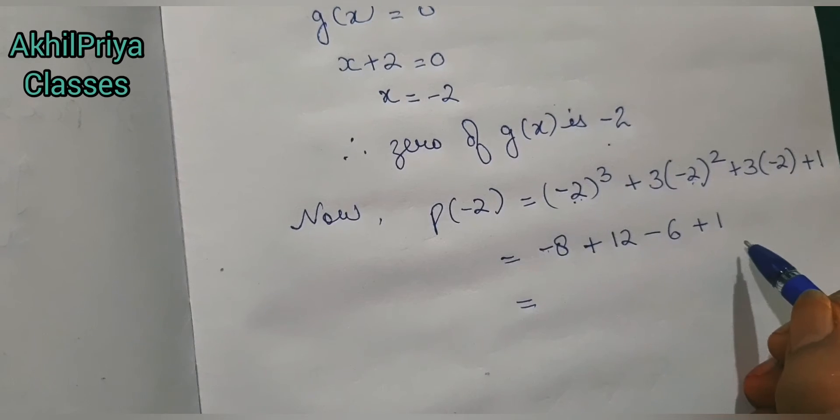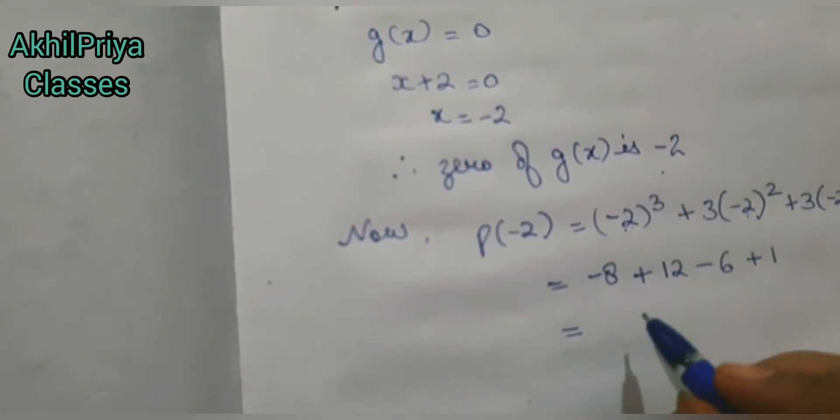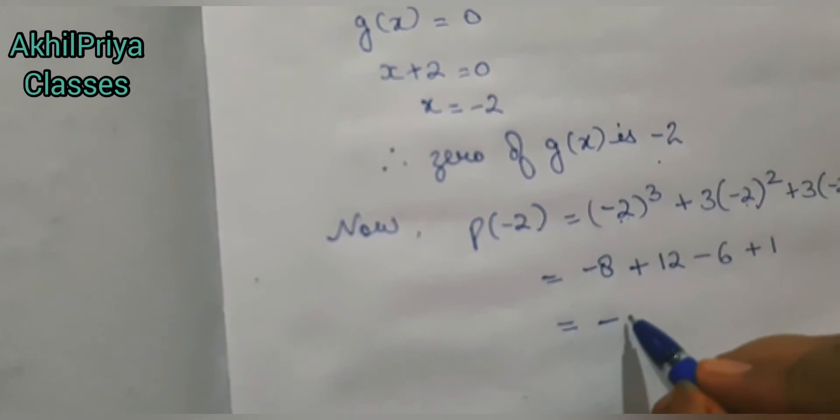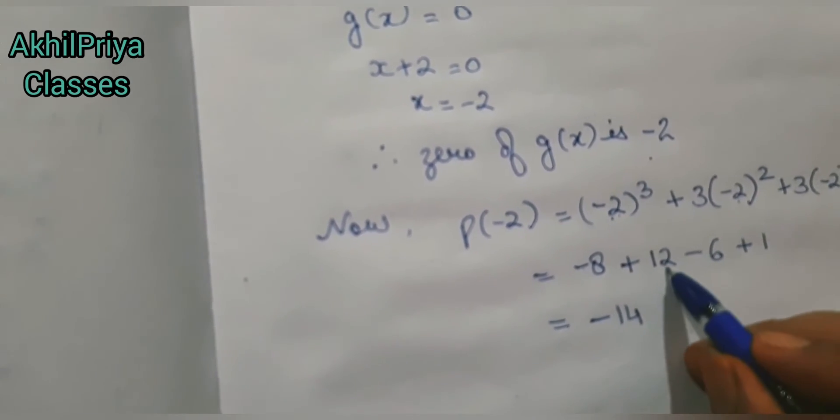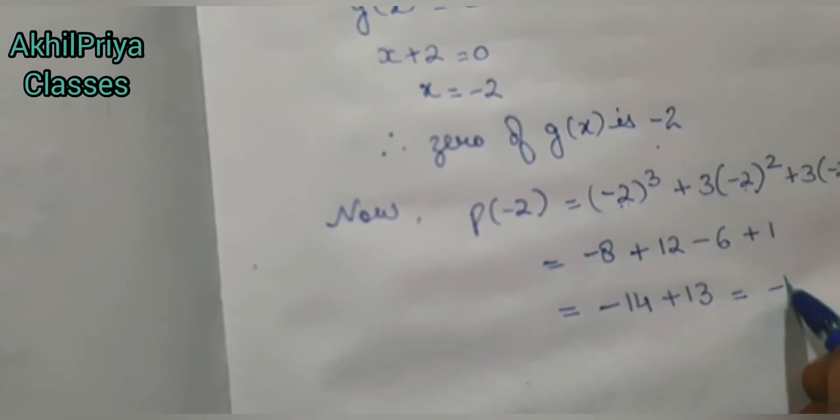So further solving this, the value we get is -8 + 12 - 6 + 1 = -1.